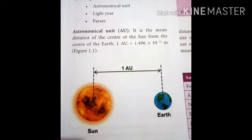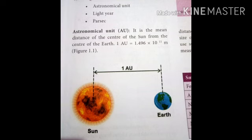Along with this, we can also measure larger distances using units like astronomical unit, light year, and parsec. The astronomical unit is the distance from the center of the earth to the center of the sun. We can measure this large distance in the form of astronomical unit, as defined in the tabular column.